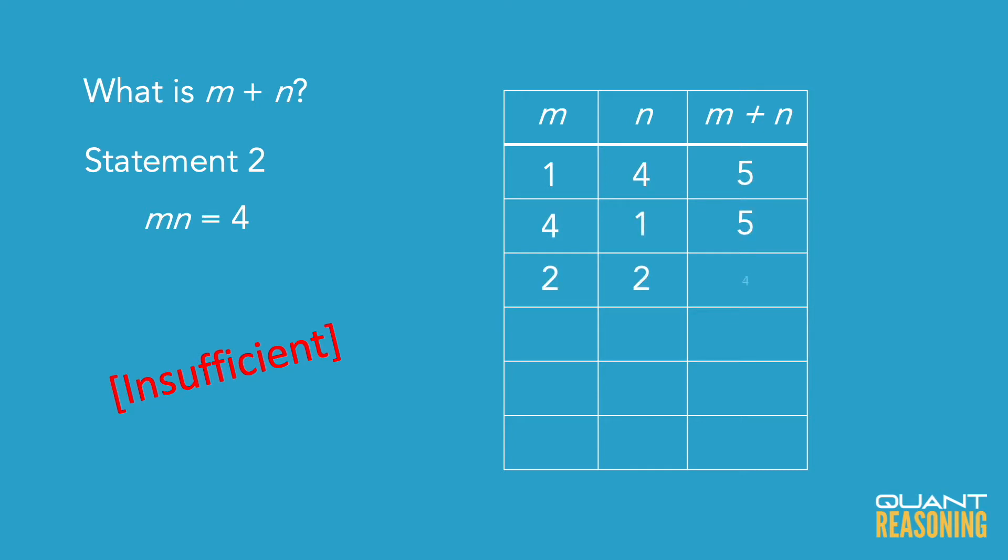They could be negative two and negative two, whose sum is negative four. They could be negative one and negative four, whose sum is negative five. So there are actually four different possible answers with statement two on its own here. Let's go ahead and evaluate statement one right after the intro.